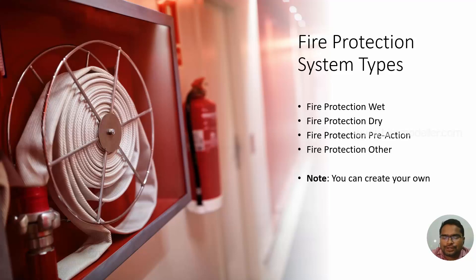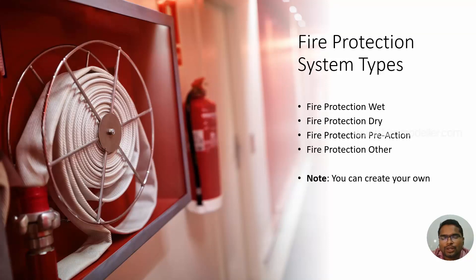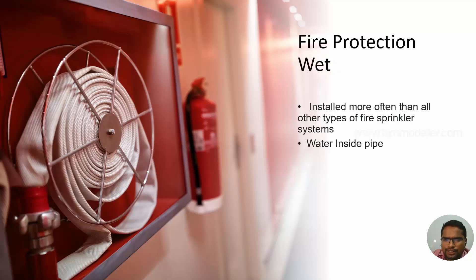What are the types of fire protection systems? If you are looking at the pipes, you will be able to see these: fire protection wet, fire protection dry, fire protection pre-action, and other fire protection systems. You can also create your own systems based on your requirement, because in industries there are more systems beyond these. By combining these systems, we can create our own systems as well. Let's go and discuss them one by one.